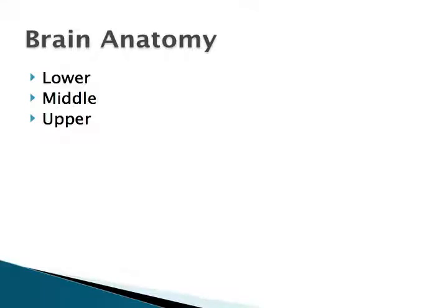I'd now like to talk about brain anatomy. There are various parts of the brain that have been categorized and interpreted in different ways. What I'd like to talk about are three general areas and how they relate to learning: the lower, middle, and upper brain.